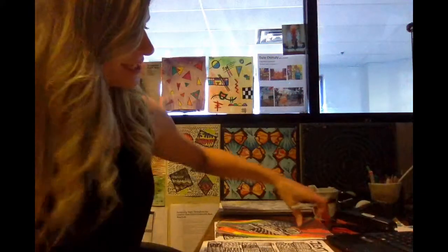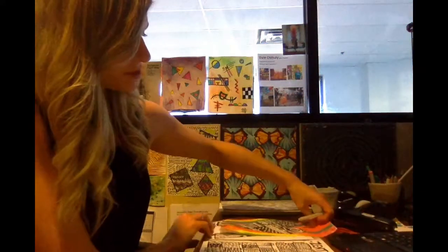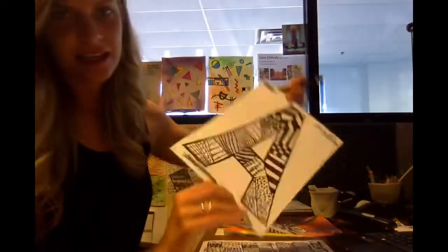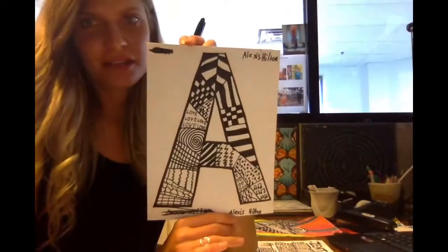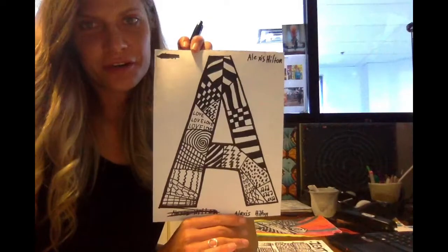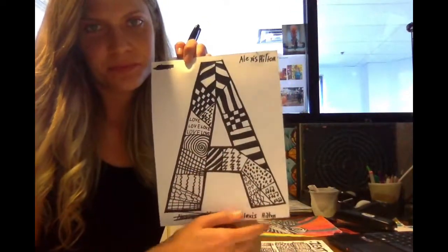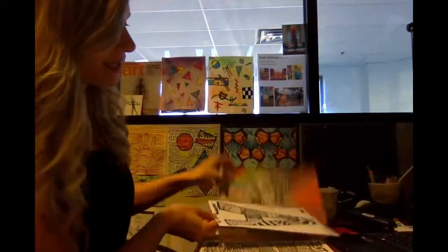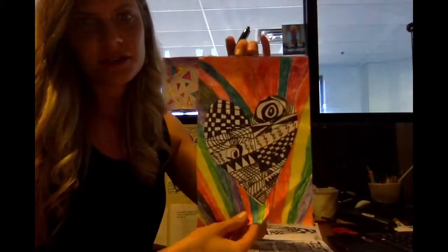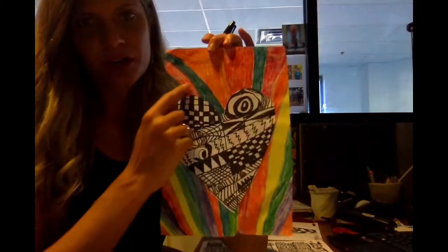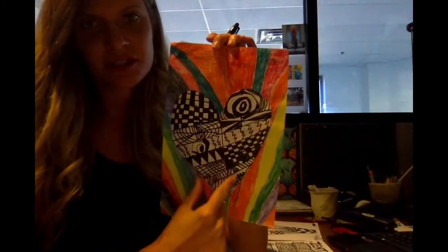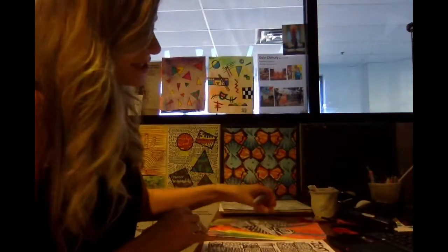Hey guys, today we're making our Zentangle project. I'm going to show some Zentangles from previous years. One year we did the first letter of our name and made Zentangle patterns inside the letter. Another year we did a Zentangle heart where we traced a heart, broke up different sections inside, and made Zentangle patterns. This year we're going to make a Zentangle hand by tracing our hand.